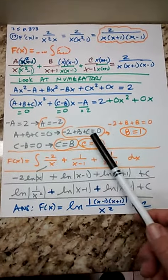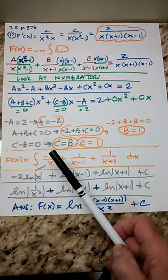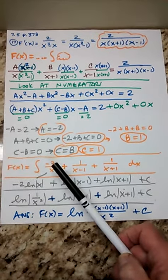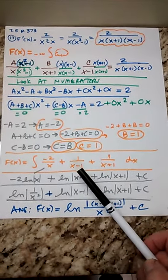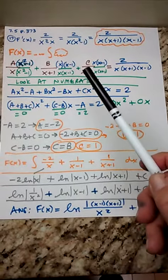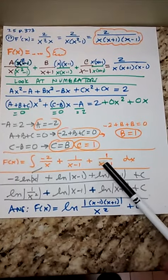So then if we just follow through on the simultaneous equations, we get a is negative 2 over x, b was 1 over x minus 1, and the c up there becomes 1 over x plus 1.